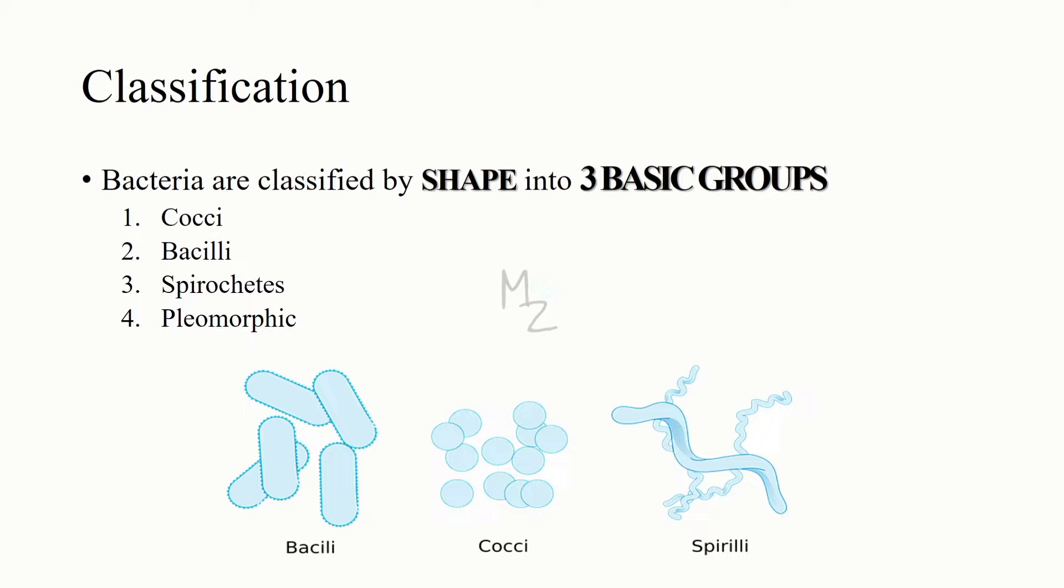The shape of a bacterium is determined by its rigid cell wall. Classification: bacteria are classified by their shape into three groups. One, cocci, but in some places it is also pronounced as coccae. Two, bacilli. Number three, spirochete, but it is also pronounced as spirochaete in some places. You should choose the one you like. Four, pleomorphic.